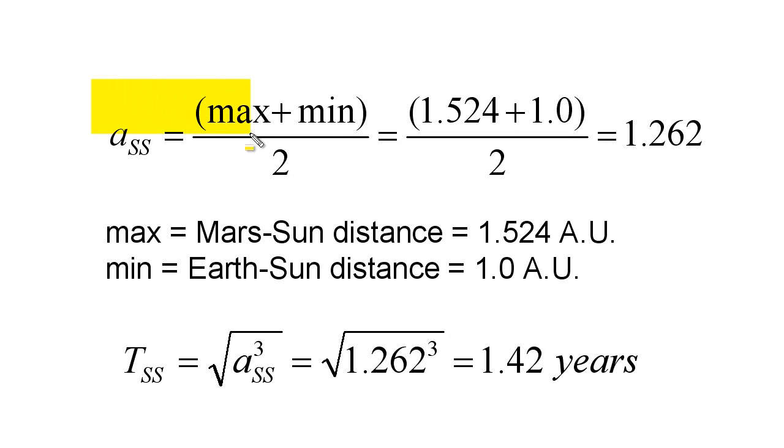Now we want to find A for our spaceship, and we use the max plus min over 2 equation. We know that the max distance is the Mars-Sun distance, and the min distance is the Earth-Sun distance. Plugging these into the equation, we get 1.262. Previously, we found that T equals the square root of a cubed. Plugging this number in, we get 1.42 years for the orbital period of the spaceship.